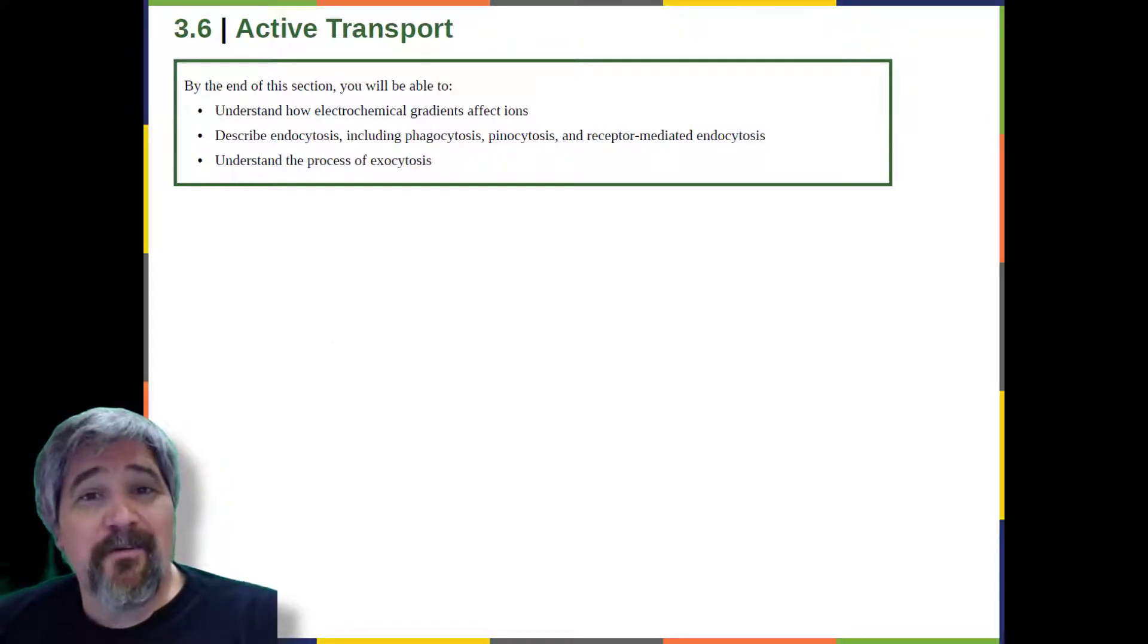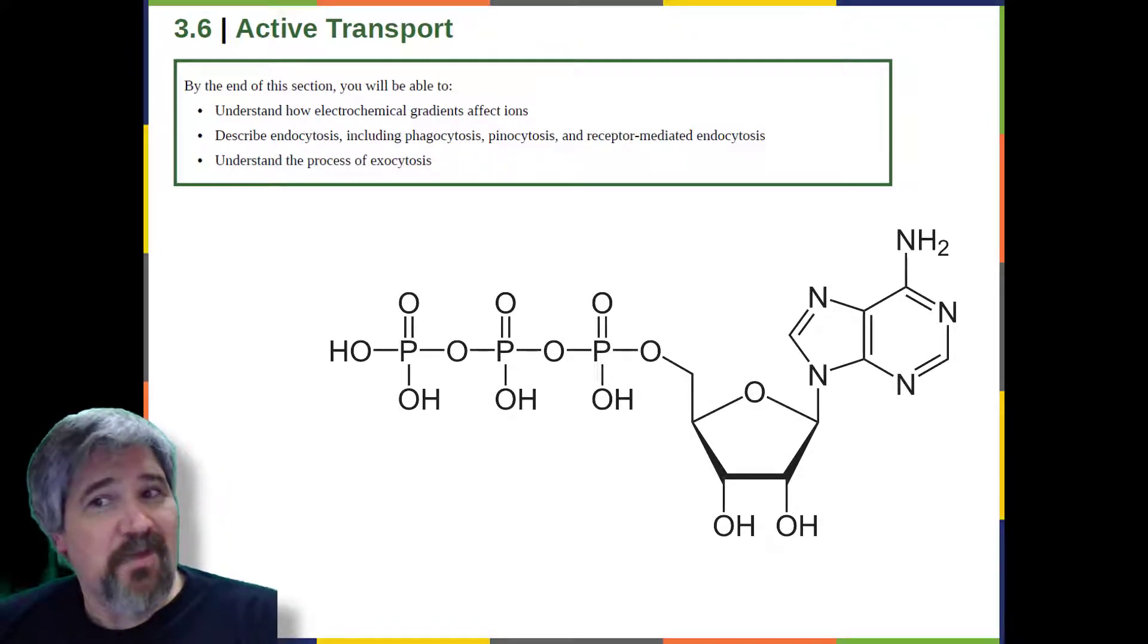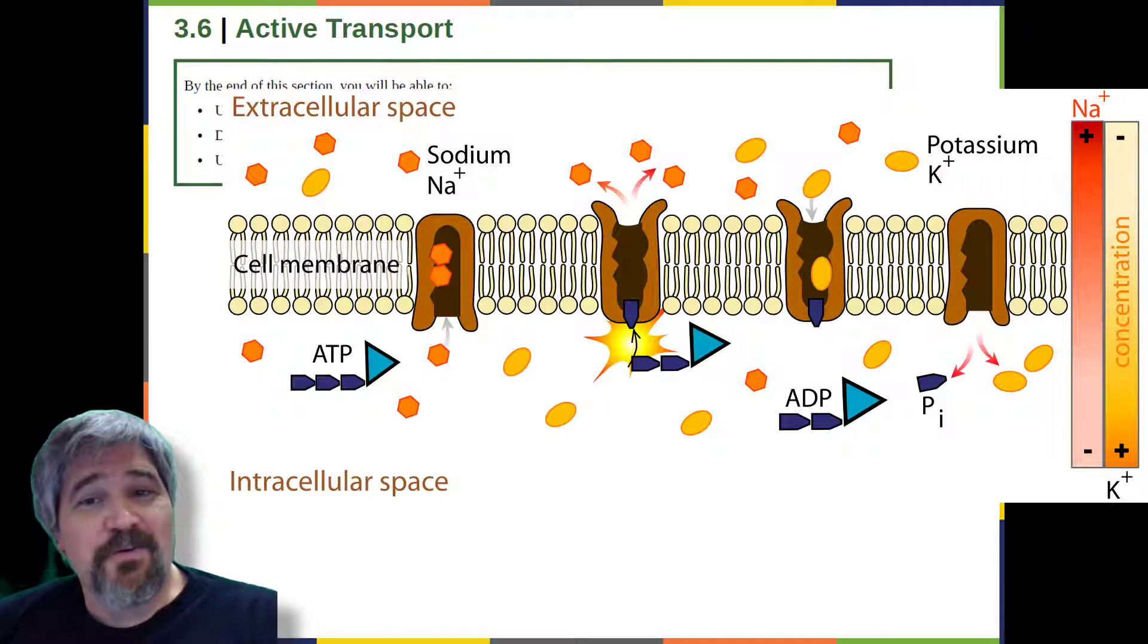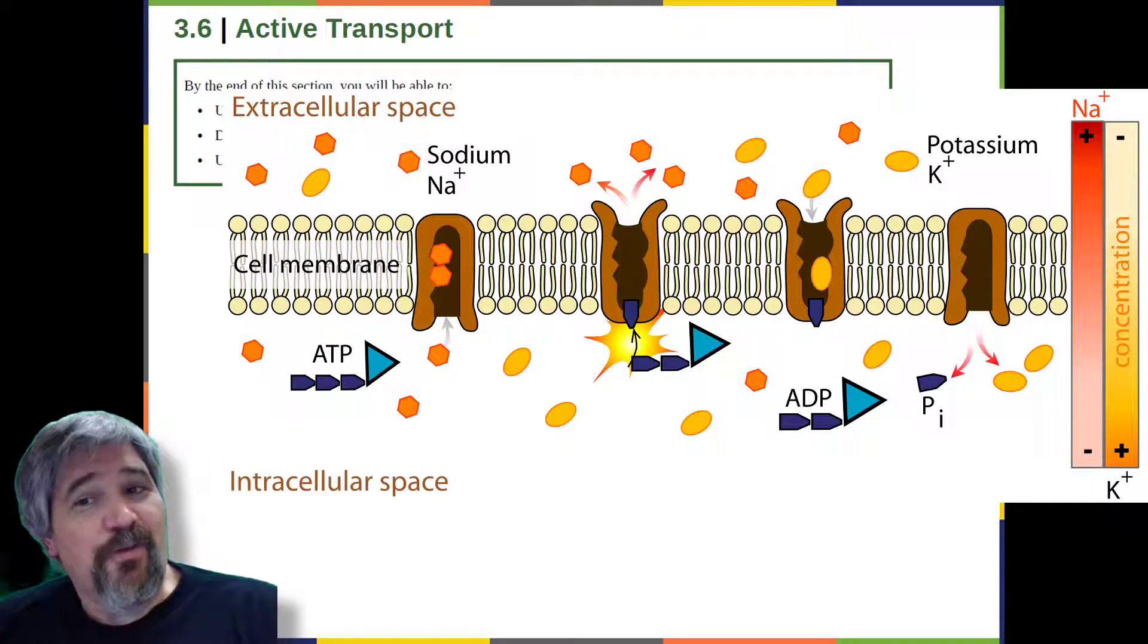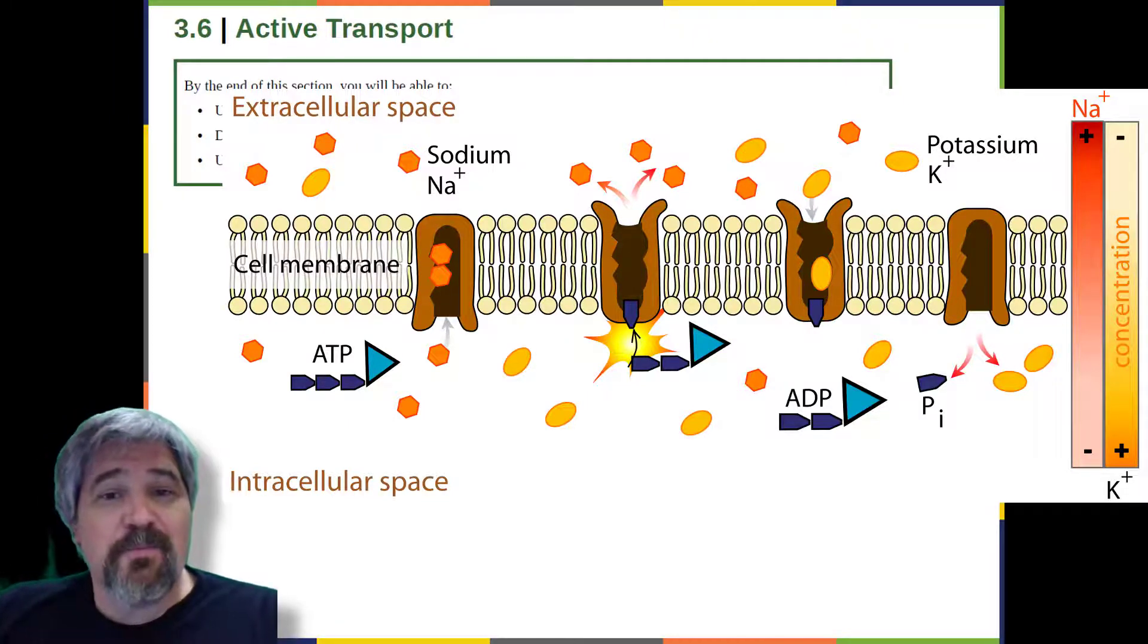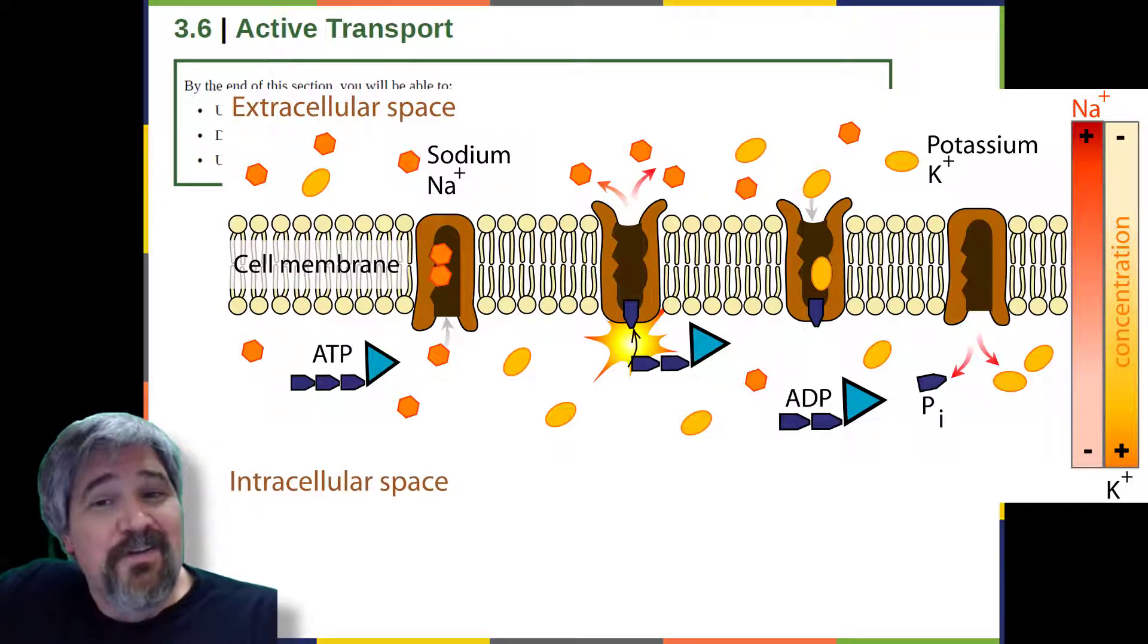Active transport mechanisms require the use of the cell's energy, usually in the form of adenosine triphosphate, ATP. If a substance must move into the cell against its concentration gradient, that is, if the concentration inside the cell must be greater than its concentration in the extracellular fluid, the cell must use energy. Some active transport mechanisms move small molecular weight materials, such as ions, through the membrane.